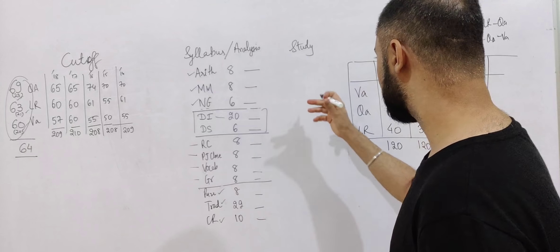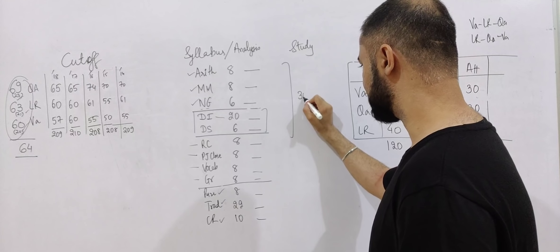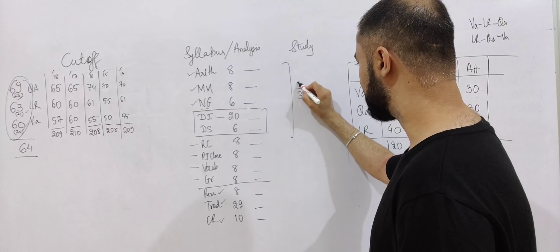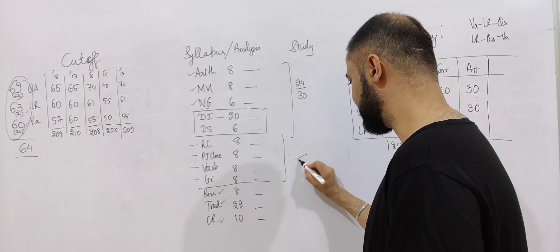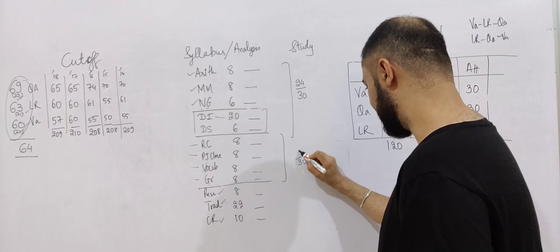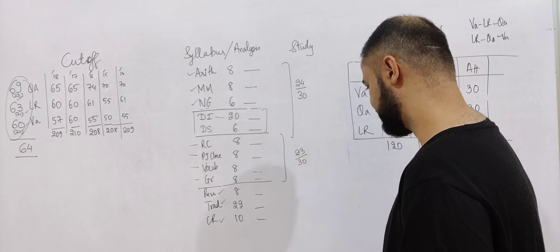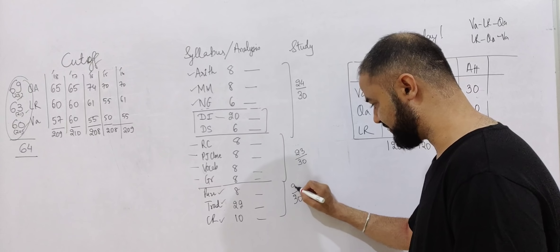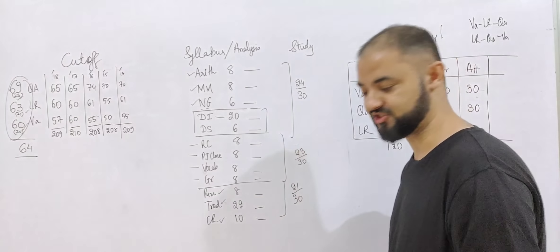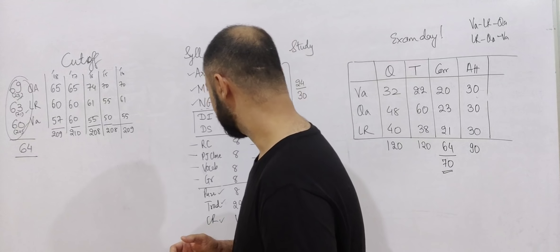In the complete quant section your target is to attempt 30 questions and get 23-24 questions right. In verbal, your target is to attempt 30 questions and get around 23 questions correct. And same in logic as well, your target is 30 questions and get 21 questions correct, so that I can achieve my target.